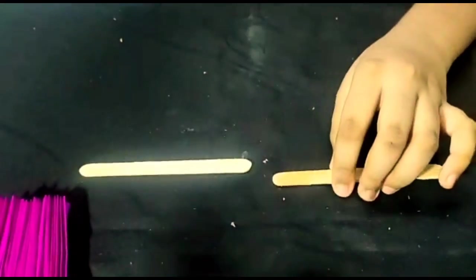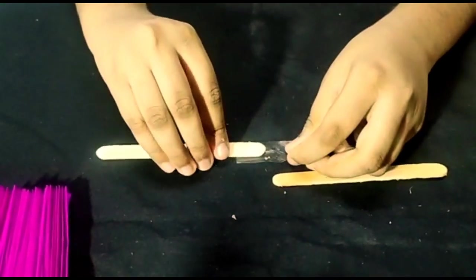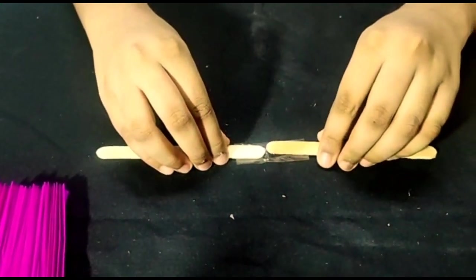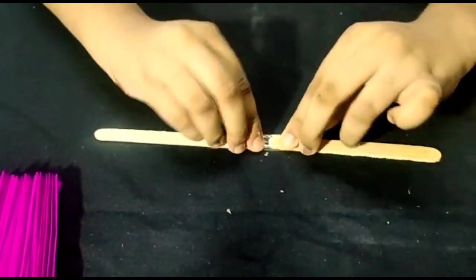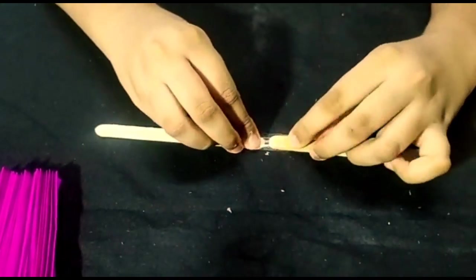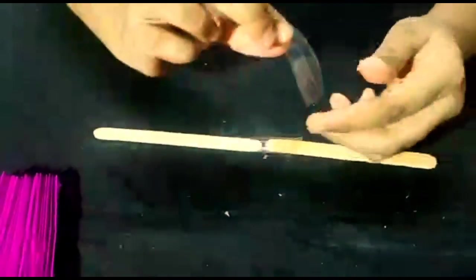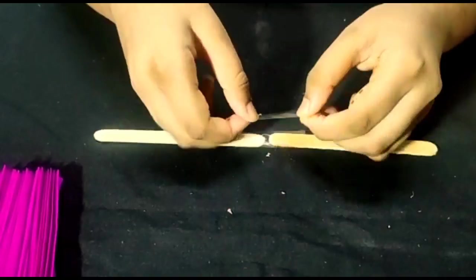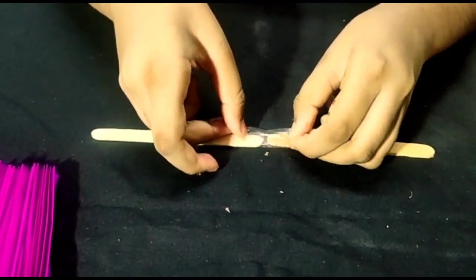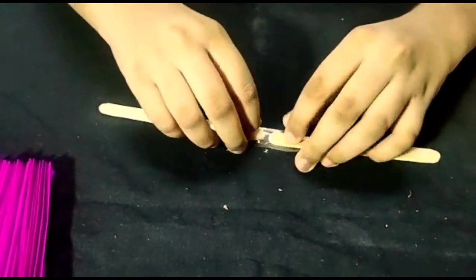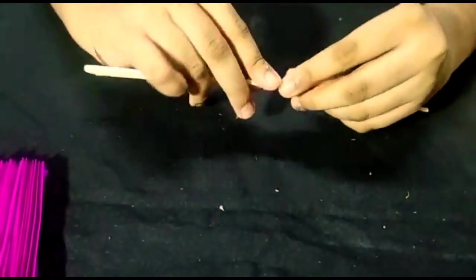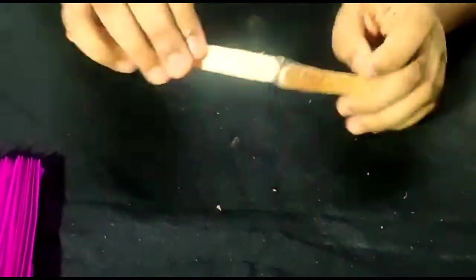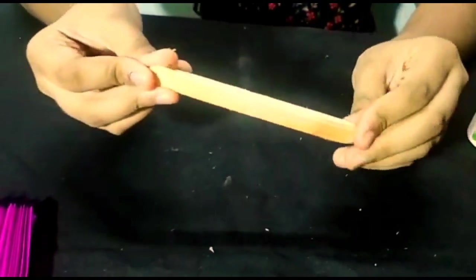Take two ice cream sticks and fix it with cello tape as shown in video. Fix on both sides. Now this forms the arms of angles. By fixing the cello tape like this, we can easily rotate the ice cream stick.